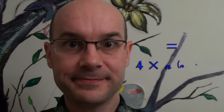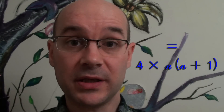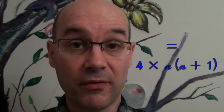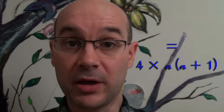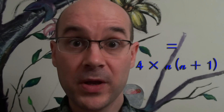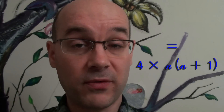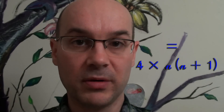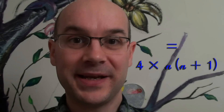So what can we do? We can rearrange it again like this, and we see immediately that if n is an even number, then we have 4 multiplied by an even number and then multiplied by another number, which makes a multiple of 8 — because 4 multiplied by an even number is always a multiple of 8. That's good.